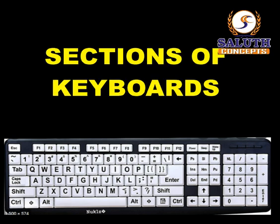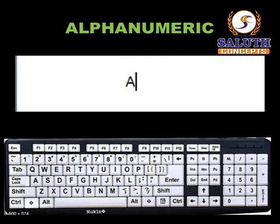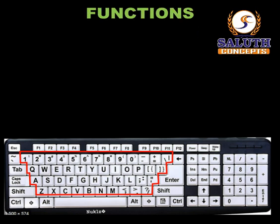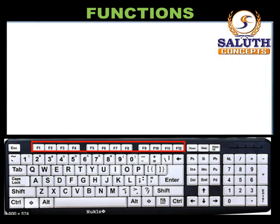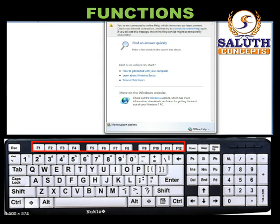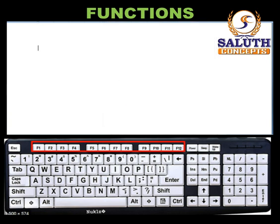The keyboard is divided into sections. Alphanumeric keys: this is the compartment for alphabet, number, and symbol typing. Function keys: these are used to perform special commands with a single key, usually ranging from F1 to F12. For example, F1 for help, F5 for slideshow especially in MS PowerPoint, and F12 to save especially in MS Word.